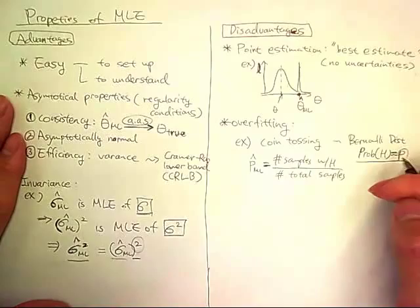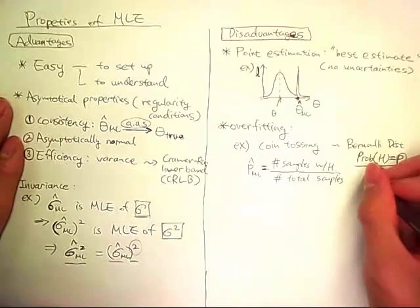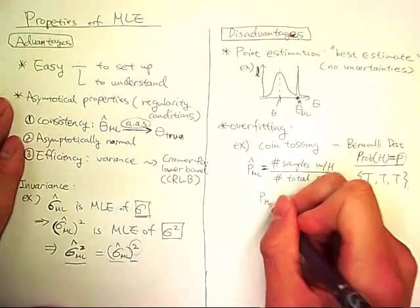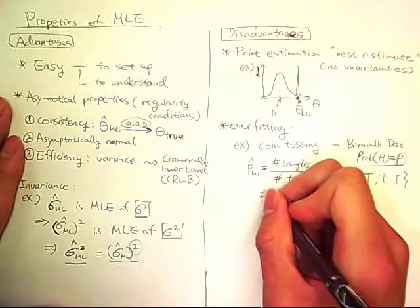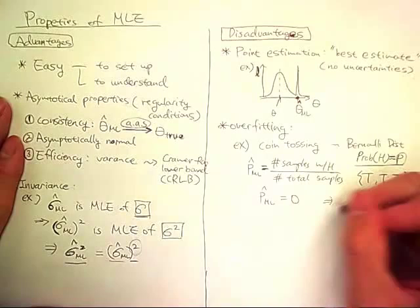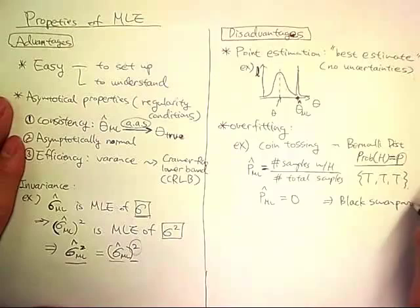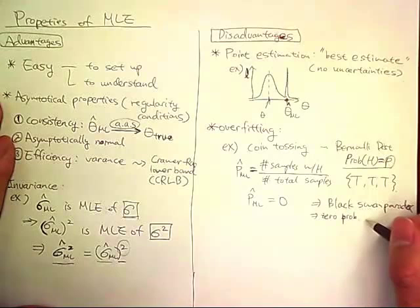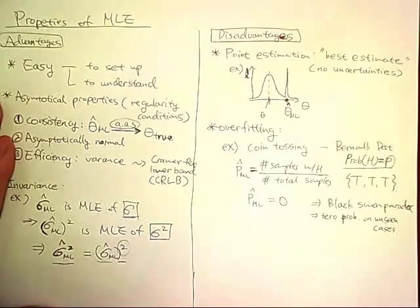So that means that MLE of P is zero. This is sometimes called the black swan paradox. So basically it gives a zero probability on unseen cases. So this is a problem of MLE.